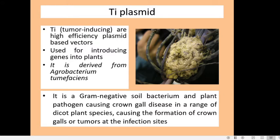Usually plasmids are used for transferring genes into bacterial host cells, but here the Ti plasmid is used for transferring genes into plant cells. So how is this possible? For that we should know what is the source of Ti plasmid. Ti plasmid is derived from a bacterium called Agrobacterium tumefaciens.